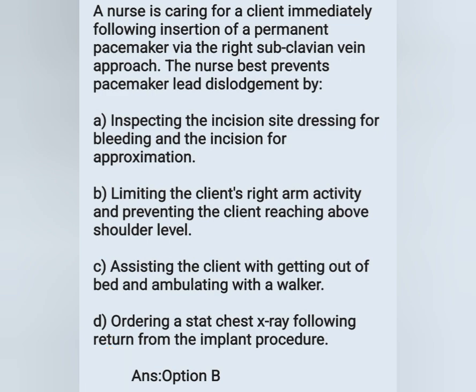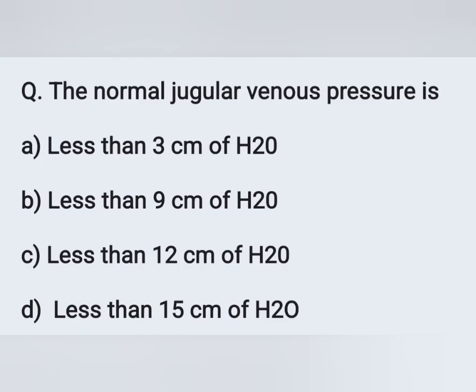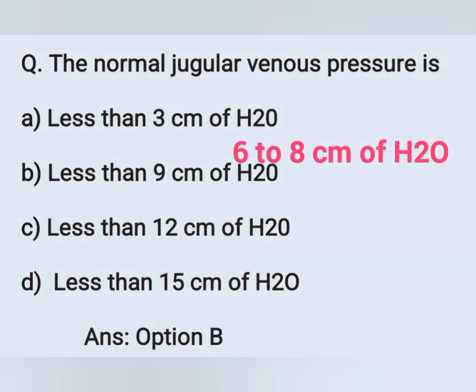Next question: the normal jugular venous pressure is: A) less than 3 cm of water, B) less than 9 cm of water, C) less than 12 cm of water, D) less than 15 cm of water. The normal JVP is 6 to 8 cm of water. Since that exact option is not available, we choose less than 9 cm of water. Option B is correct.